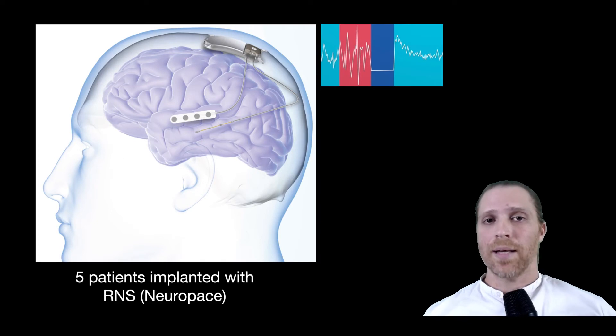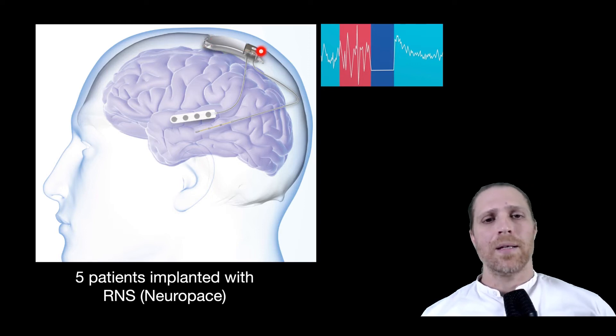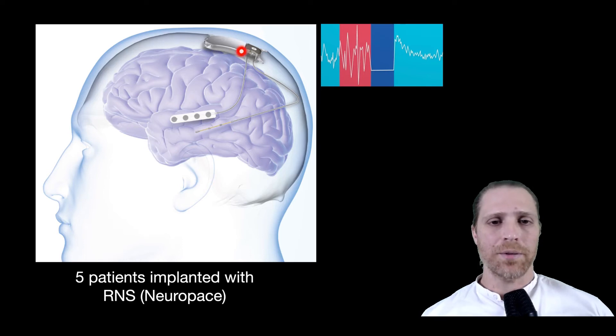So how were they able to do that? They made use of the fact that there were several patients that were implanted with a system called RNS by a company called Neuropace. You can see a schematic of this apparatus taken from this company's website. And this apparatus is implanted under the scalp, as you can see here. And it has a recording electrode as well as a stimulating electrode.